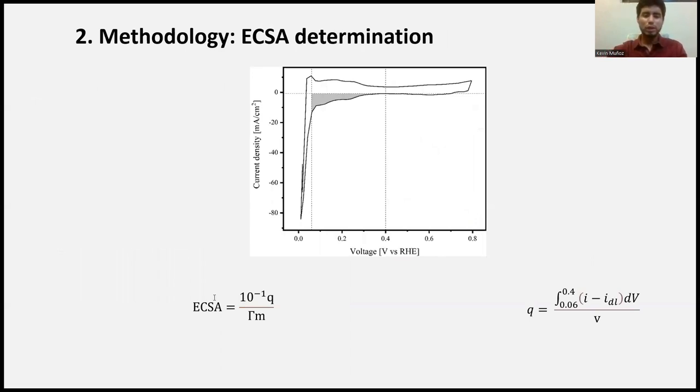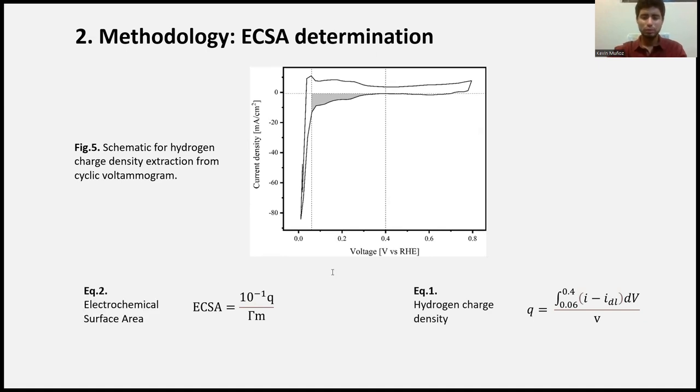The course of action employed to quantify ECSA from all of the cyclic voltammograms started with the extraction of the area of the hydrogen adsorption region, represented as the gray shaded area in the figure slide, in order to obtain the hydrogen charge density, which was computed with equation 1. As seen in the expression, the hydrogen adsorption region incorporates the integration of the area of the baseline current density at 0.4 volts, designated as the double layer current density, iDL, and then divided by the scan rate V. Then the calculated hydrogen charge density number was introduced in equation 2 to determine the ECSA value. In equation 2, the variable M is the platinum content in the electrode, and the constant T related to hydrogen adsorption by platinum.